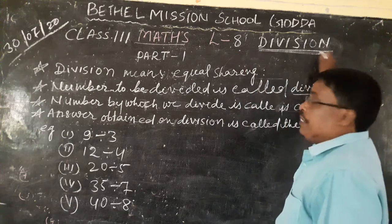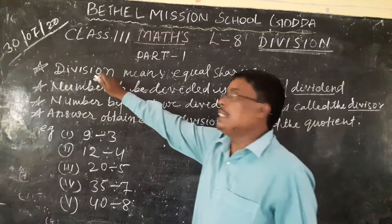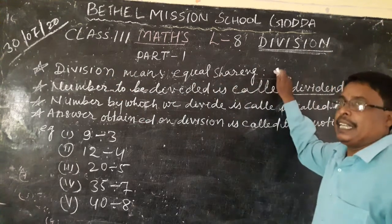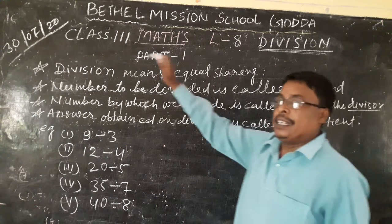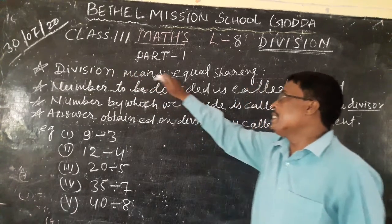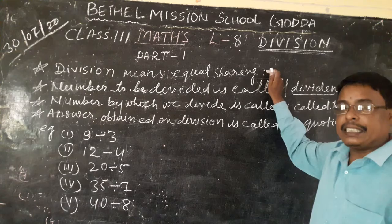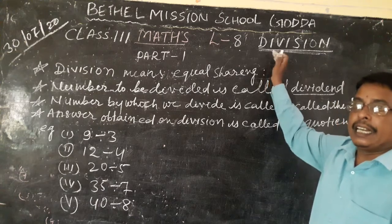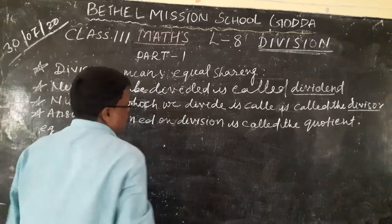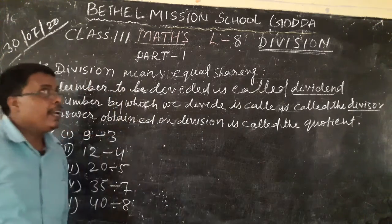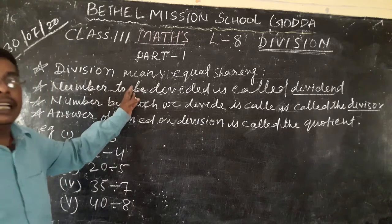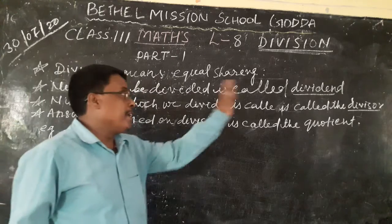What is Division? Division means equal sharing. Division is a short way of the subtraction of the same number.